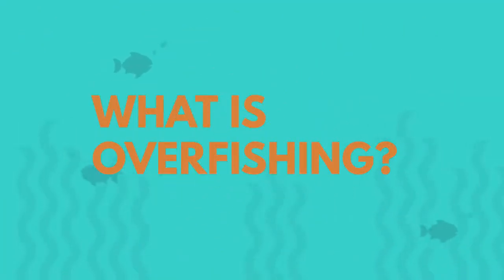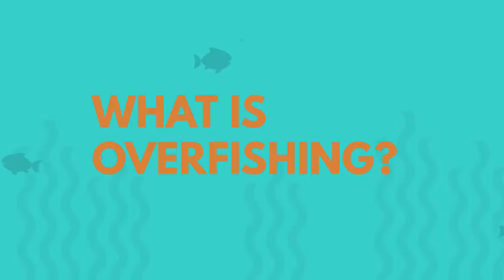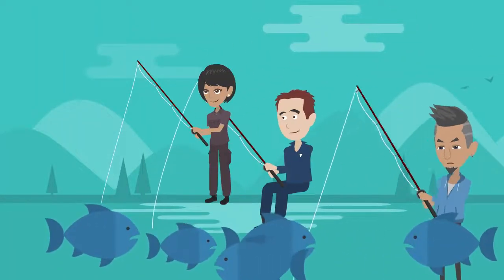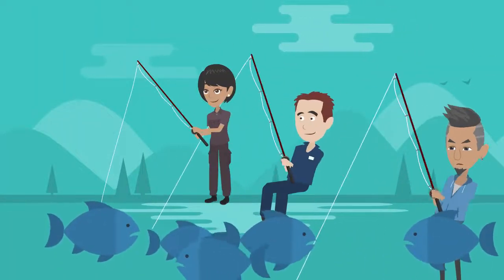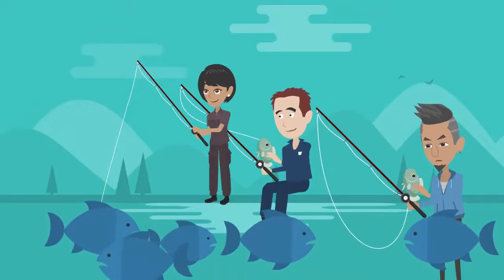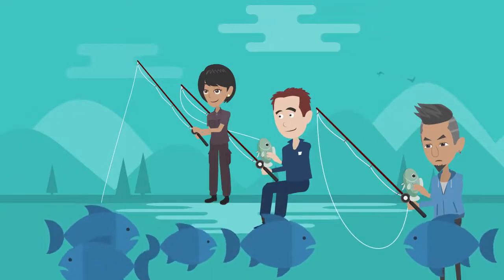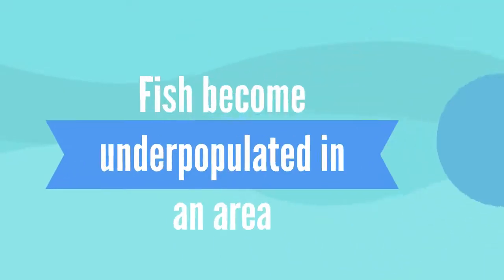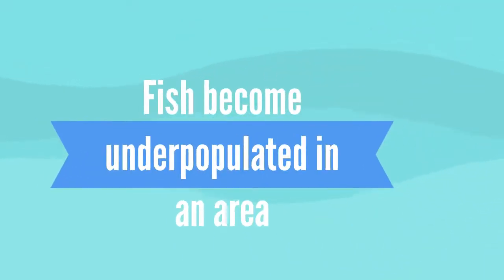What is overfishing and why is this such a big problem? Overfishing means that fish are being caught at a faster rate than they can multiply and naturally repopulate, which limits their ability to maintain healthy population numbers. As a result, the fish become underpopulated in that fishing area.